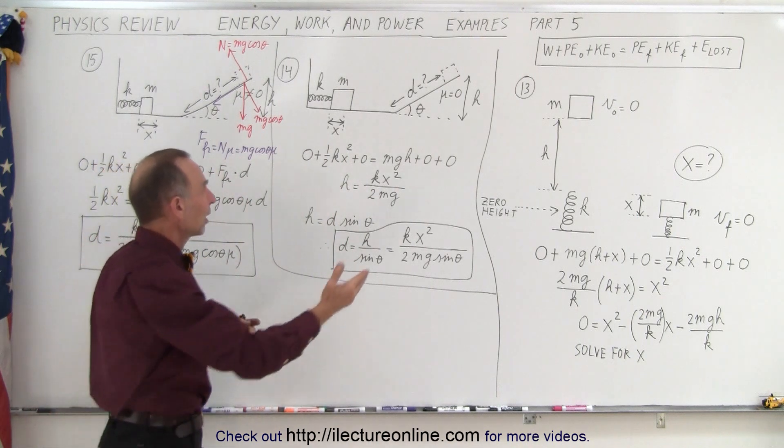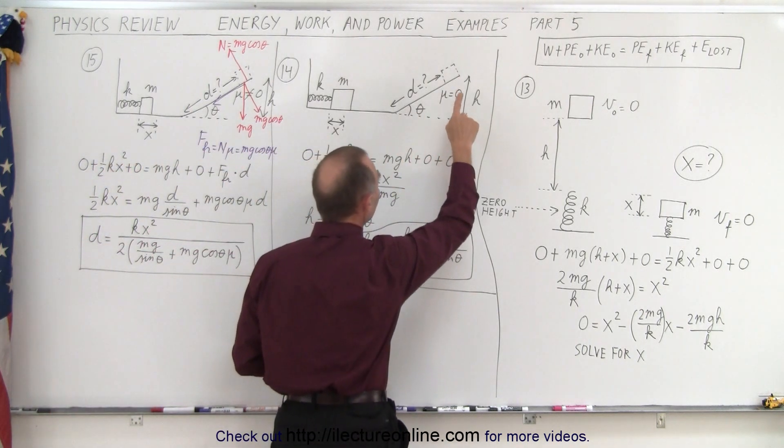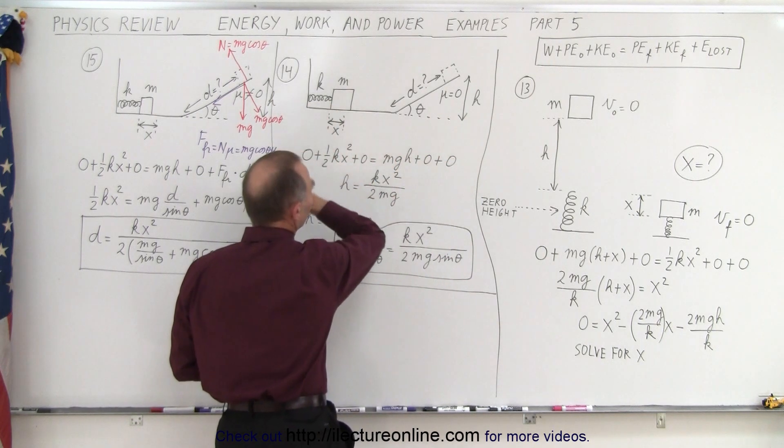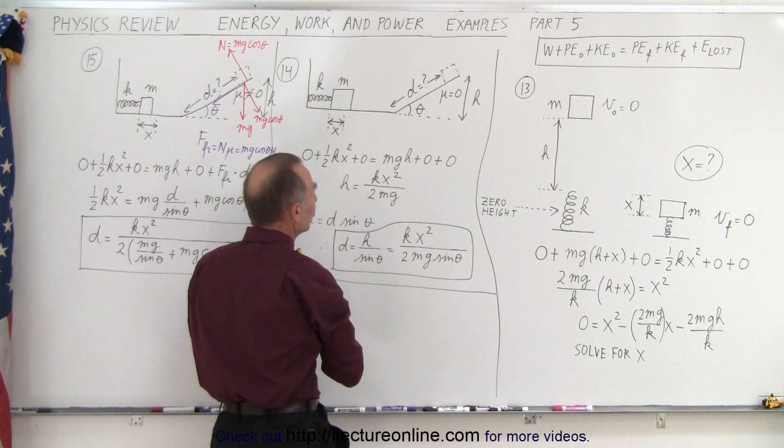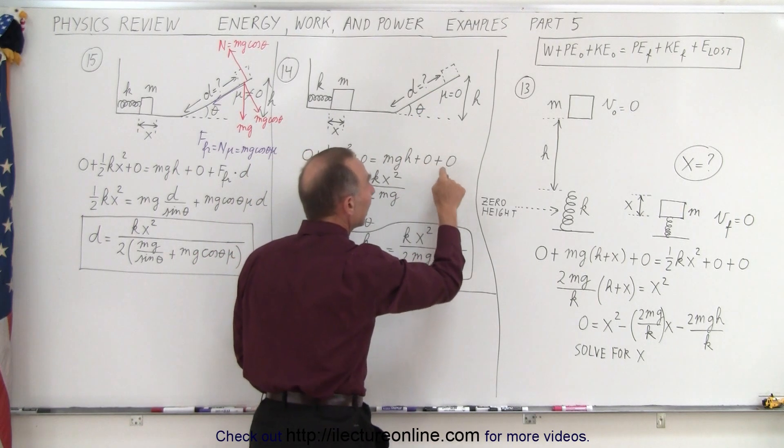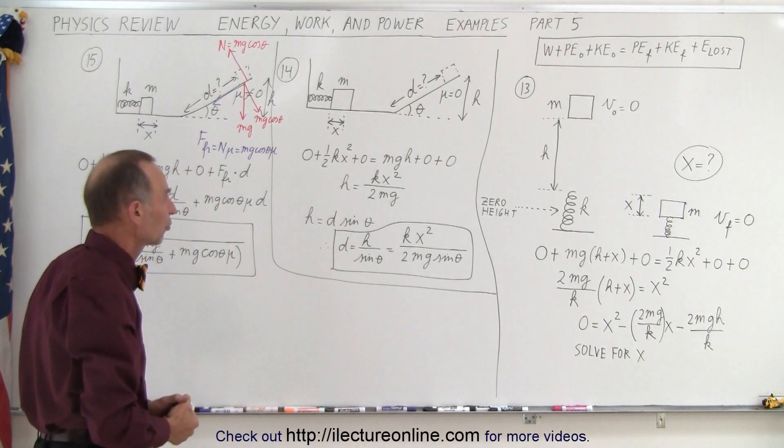At the very end, we don't have to worry about anything in the middle. At the very end, it's reached the height h, which gives us mgh. The spring is no longer compressed, so there's no potential energy there. The block comes to a stop, so there's zero kinetic energy, and there's no friction anywhere, so zero energy loss.